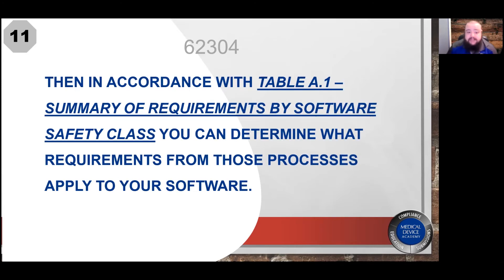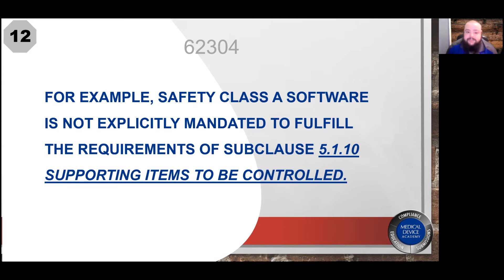Once you've assigned a software safety classification to your software system, you'll move to Table A1, which is the summary of requirements by software safety class. That table explains which requirements from those processes apply to your software based on the software safety classification. For example, if your software system has a software safety classification of Class A, it is not required to fulfill the requirements of sub-clause 5.1.10, supporting items to be controlled. The individual requirements of all five processes are dependent upon the classification of your software.